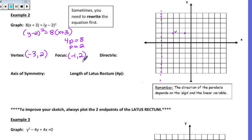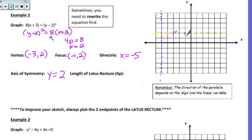Our directrix is a vertical line: x is equal to negative 5. The axis of symmetry, shown in yellow, runs through the directrix, the vertex, and the focus. This is a horizontal line at y is equal to 2. The length of the latus rectum is going to be the coefficient in front of the term that is not being squared — it's the term without the square. It is a total of 8, based off the focus, so we count 4 up and 4 down. The focus is in the middle of that latus rectum, and then we create our parabola — a little wider, opening to the right.